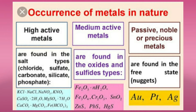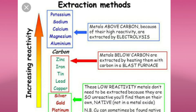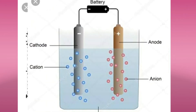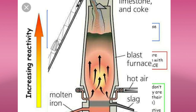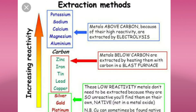From the activity series we can understand the method of extracting metals from their ores. Potassium, sodium, calcium, magnesium, and aluminium are at the top of the activity series — they are highly reactive metals extracted by the process of electrolysis. Zinc, iron, tin, lead, and copper are less reactive metals, extracted by heating with carbon.